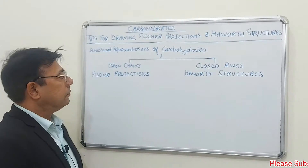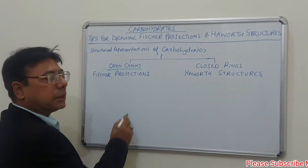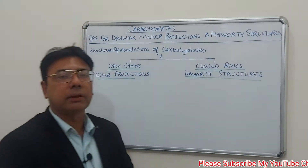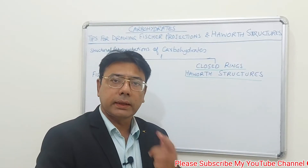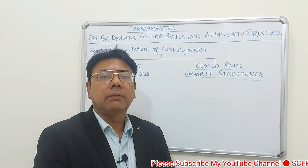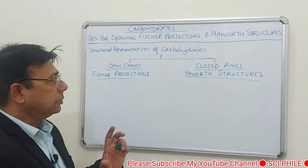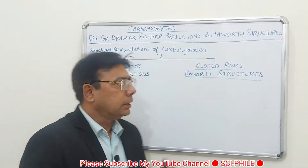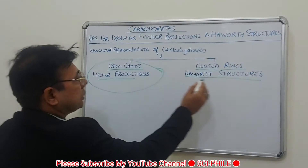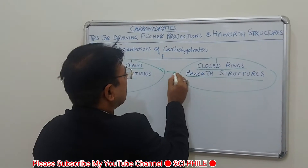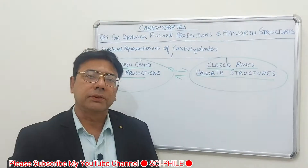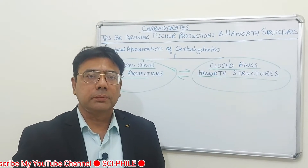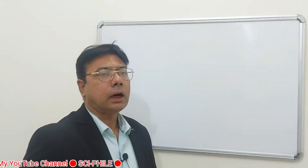Carbohydrates are represented in two patterns: one are open chain structures which are called Fischer projections, and the other are closed ring structures which are called Haworth structures. In oligosaccharides and polysaccharides I will be using Haworth structures, and you should know exactly how a Fischer projection can be converted to a Haworth representation. In this short video you will see how these two types of structures can be interconverted.